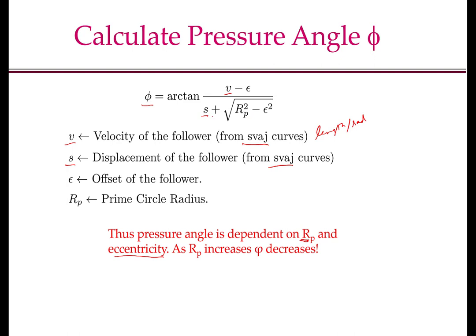Since Rp is in the denominator, keeping S, V, and epsilon constant, as Rp increases, phi decreases. This implies that one simple way to ensure a good pressure angle is to make the cam as large as possible, or increase Rp as much as you can. However, increasing Rp means the size of the cam increases, so material cost and machining cost increase. Furthermore, packaging constraints may limit the size of the cam. So Rp, the radius of the prime circle, is the proxy for the size of the cam.